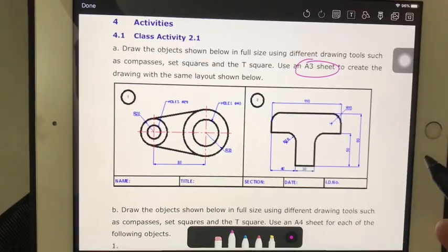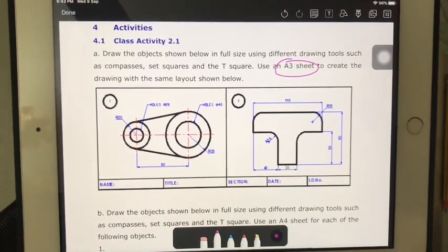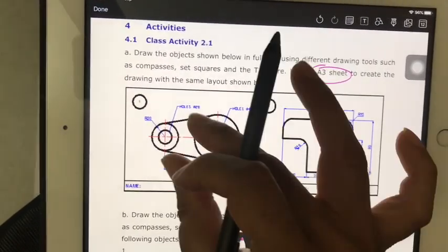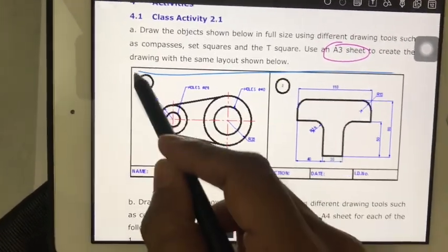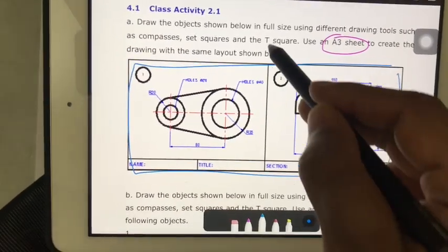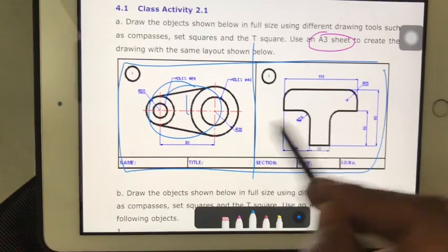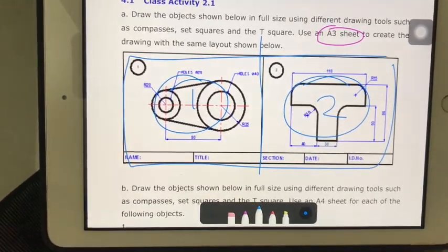As I told you before, prepare the A3 size paper and then you will have to draw the layout. This is how they want it - you should have one A3 paper, divide the A3 paper into two. You will have the first drawing here and the second drawing here.